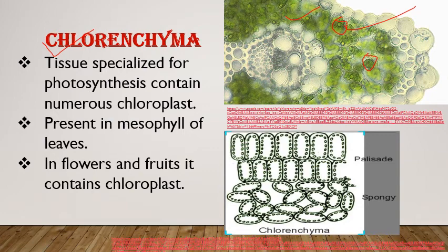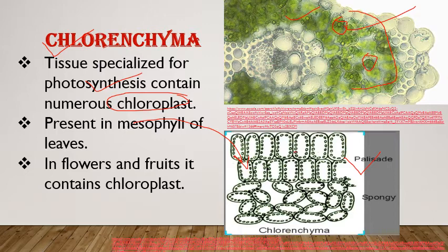Chlorenchyma helps in photosynthesis. It is a specialized tissue meant for photosynthesis and mostly forms the mesophyll tissue of the leaf — 'meso' means middle, so the middle tissue of the leaf. It is differentiated into two types: first, the palisade layer made up of compact elongated cells without intercellular spaces; second, the spongy layer with circular cells having large intercellular spaces, present on the lower side of the leaf surface.